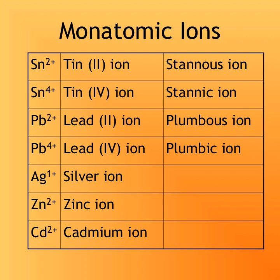Sn²⁺ is tin 2 ion or stannous. Sn⁴⁺ is tin 4 ion or stannic. Pb²⁺ is lead 2 ion or plumbous. Pb⁴⁺ is lead 4 ion or plumbic. There are three common transition metals that carry only one charge: the silver ion Ag⁺, the zinc ion Zn²⁺, and the cadmium ion Cd²⁺. Use flashcards to help memorize these, just like you memorized element symbols.